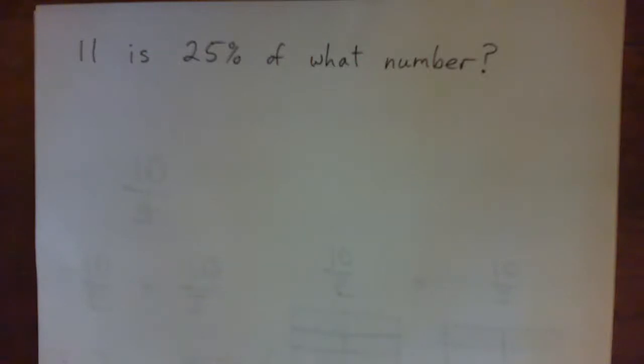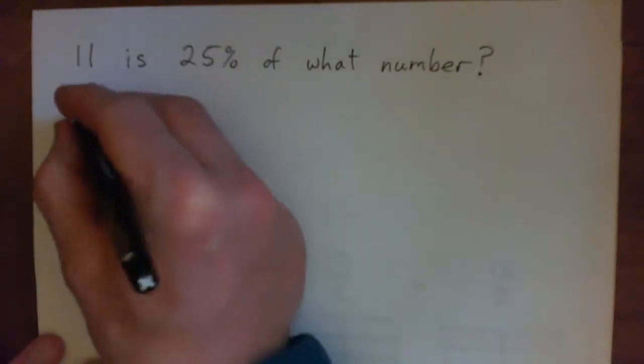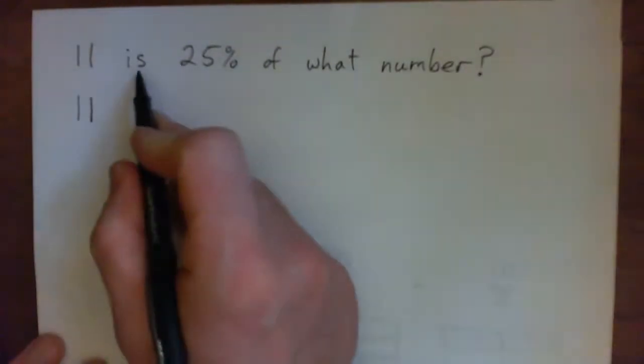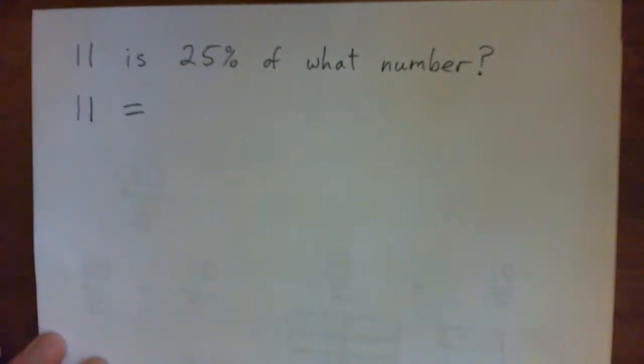So this one, 11 is 25% of what number. What we're gonna do for fun is turn this sentence into an equation and then solve the equation. So we're gonna write 11. Now 'is' turned into math equals sign. 'Is' is the same as an equal sign.